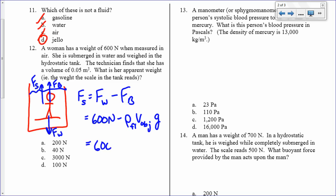that's 600 newtons minus 1,000 kilograms per cubic meter. That's the density of water times the volume of the object, which is given, 0.05 times 9 point, or times 10 meters per second squared. So that's 600 minus 500, which is equal to 100 newtons. So, that's her apparent weight, is 100 newtons.